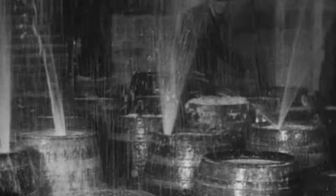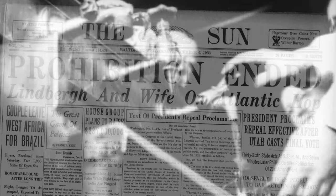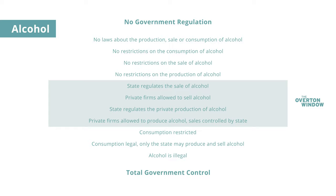When people saw the effects of prohibition, however, they decided that the law they thought they wanted, they weren't too happy with. And so the Overton window shifted back, and prohibition was repealed.